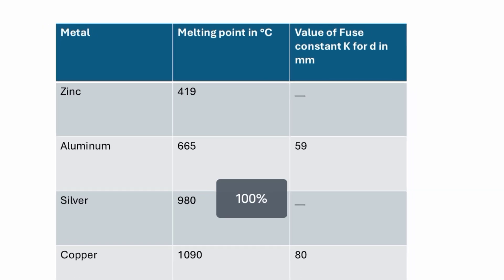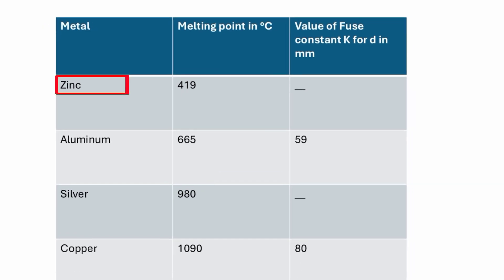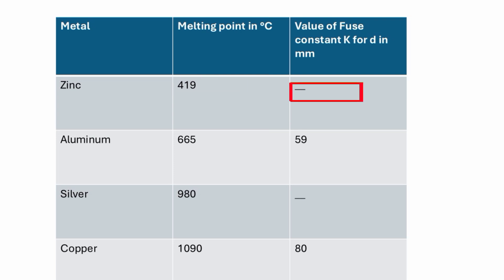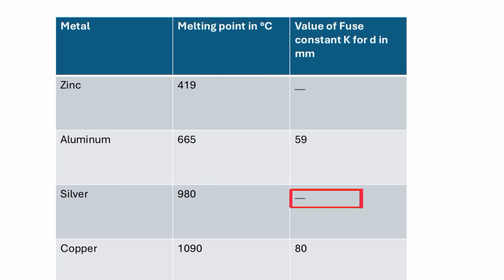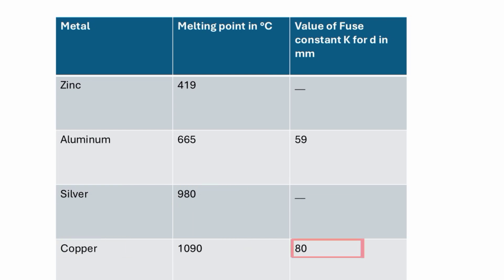Zinc: melting point 419°C, fuse constant value not listed. Aluminium: melting point 665°C, fuse constant 59. Silver: melting point 980°C, fuse constant not listed. Copper: melting point 1090°C, fuse constant value 80.